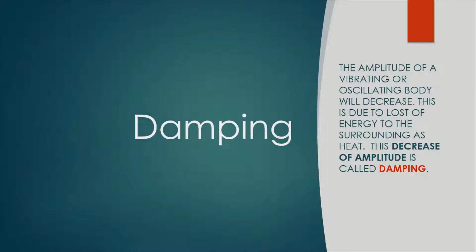So this loss of energy to the surrounding is called damping. The amplitude of a vibrating or oscillating body will decrease because there is loss of energy to the surrounding as heat. So this decrease in amplitude is called damping.